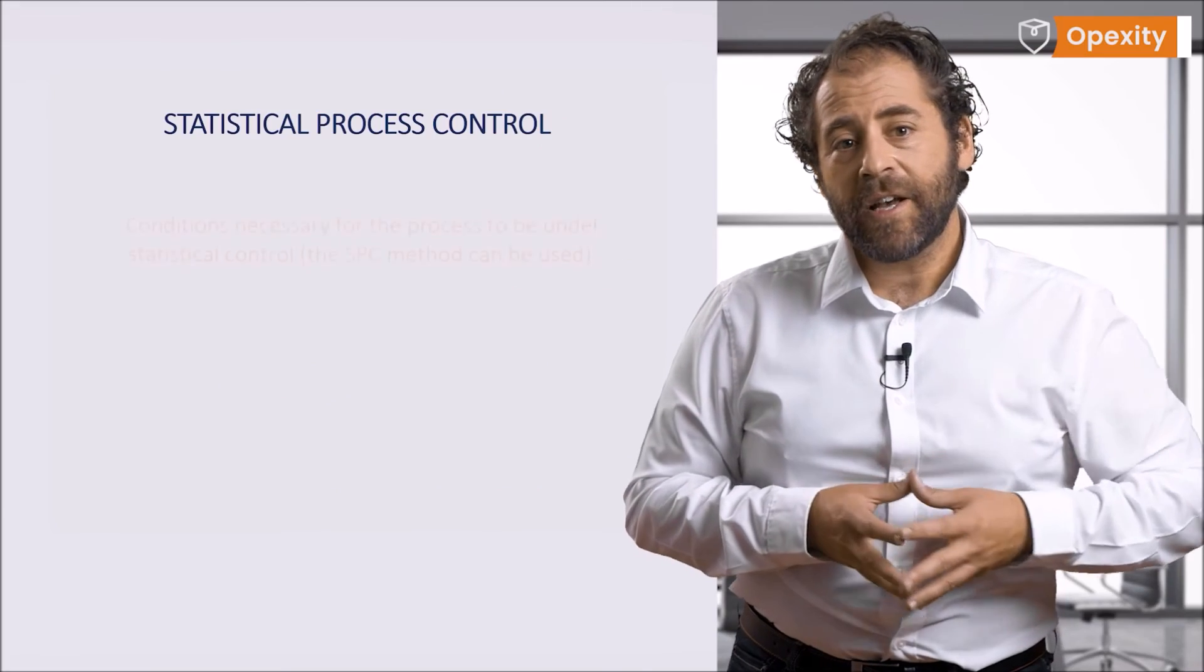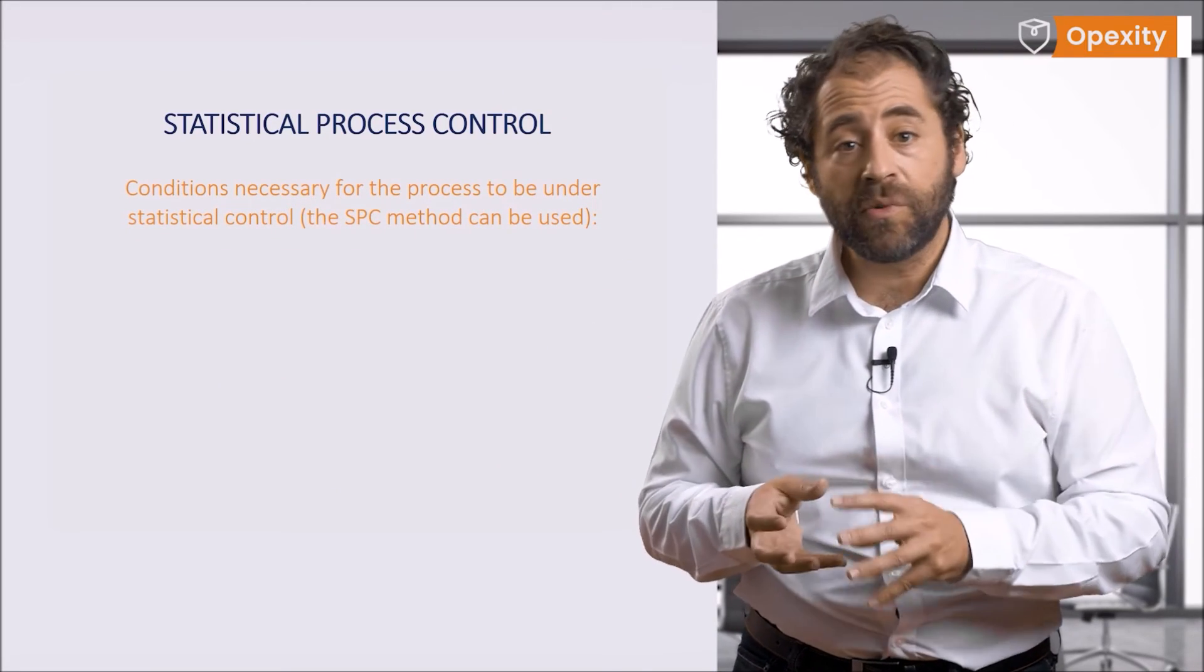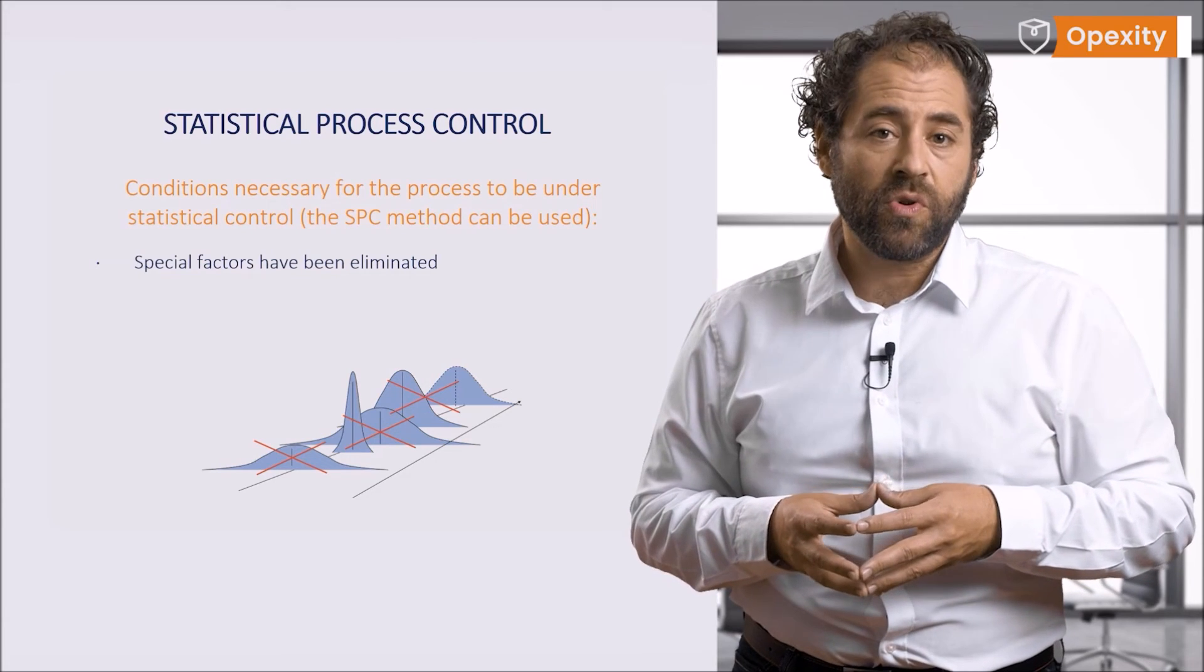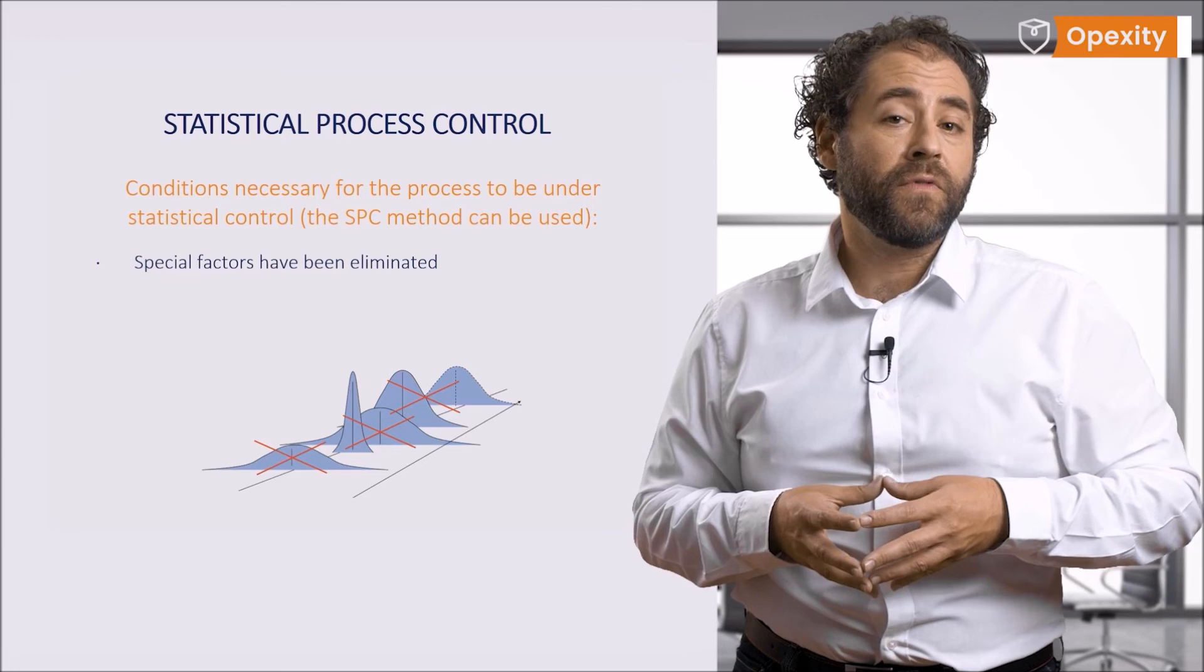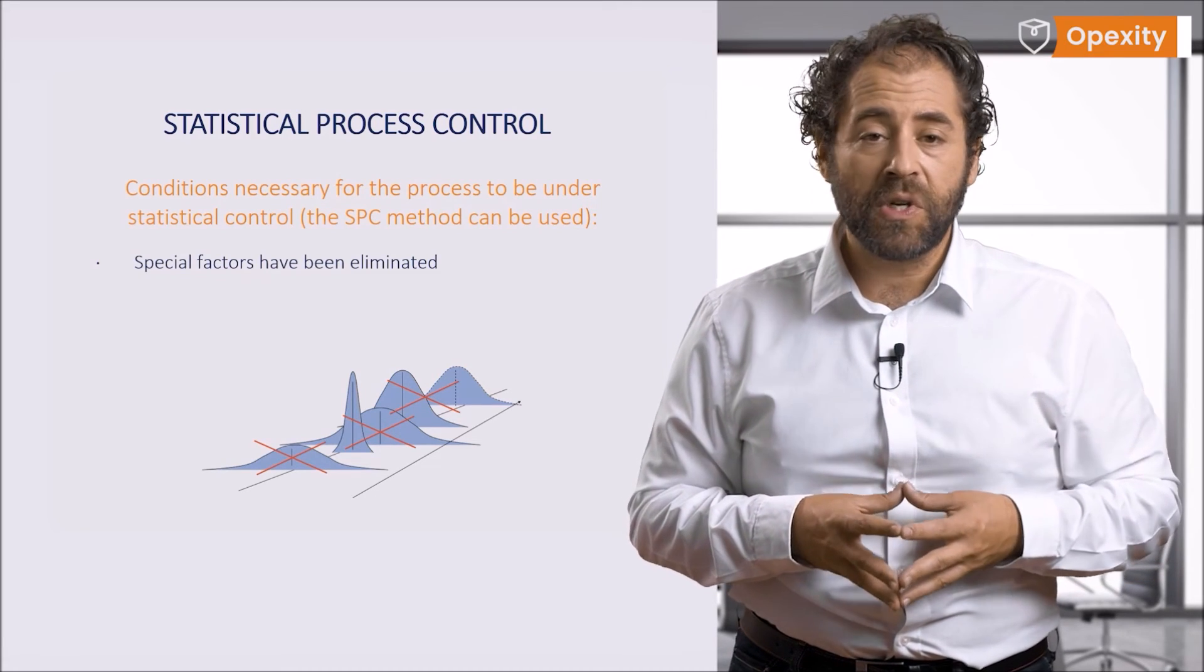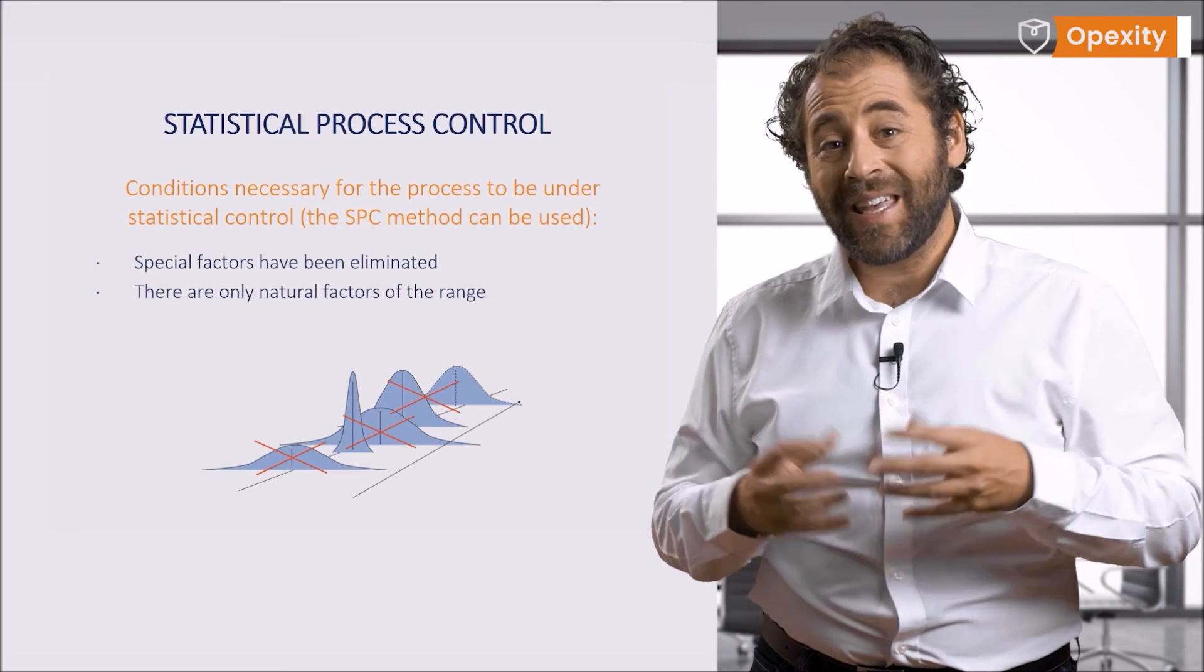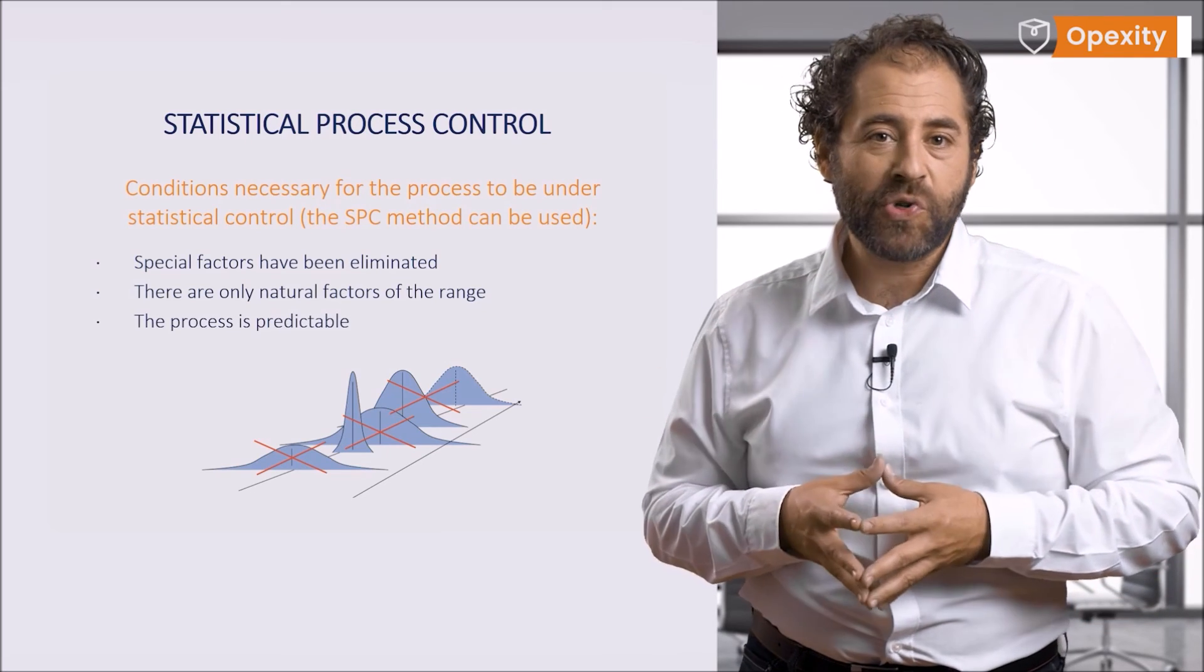The use of the SPC method will not be effective and may be even impossible if there are special factors of dispersion. They will cause changes that will be difficult to control. Therefore, special factors need to be removed first, which will be a prerequisite for an effective use of SPC. Ultimately, only natural factors are acceptable. This stems from the fact that we can work on and optimize them, thus improving our process.